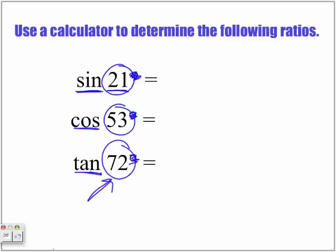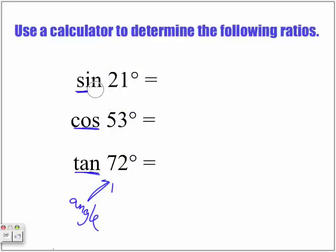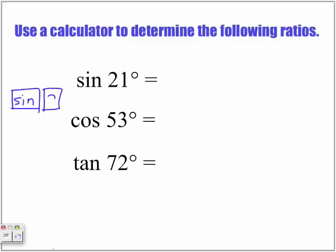That's why we put the degree symbol with all of them. Whenever we have that, it means the degree symbol. When you're typing into your calculator the following results, you are going to hit the sine button, and then you're going to type in the numbers 21. When you type that into your calculator, you will get the following result.